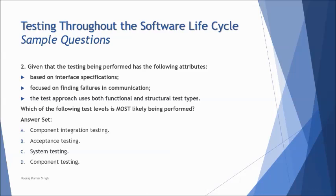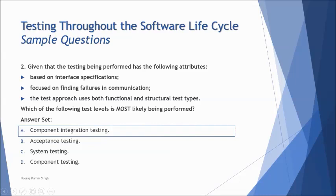The options are component integration testing, acceptance testing, system testing, and component testing. Interface specification is the basis for integration, system, and acceptance. Focused on finding failures in communication also applies to integration, system, and acceptance. However, when we look at the third point — it uses both functional and structural — structural is limited to component and component integration. Since it involves interface specification, this rules out component testing, which does not deal with interface specification. The answer is component integration testing (CIT), which can also be conducted as a white box testing type.